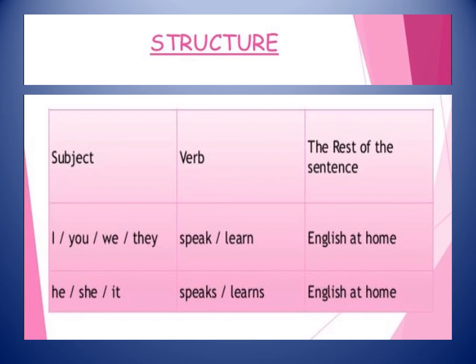For example, the pronouns I, you, we, and they hate -s. So: I speak English at home — the verb is empty. You speak English at home. We speak English. But he, she, and it like -s, so: he speaks English at home. She learns English at home. It speaks English at home.